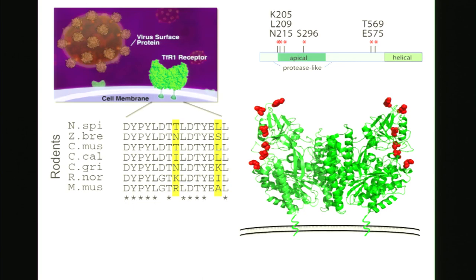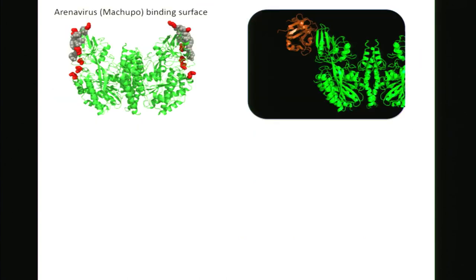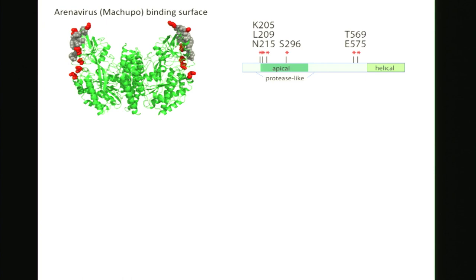When we analyzed transferrin receptor, we found six amino acid positions evolving like this. I was a little disappointed when I first saw these spread out along the linear structure — they didn't look like a binding surface. But one of my coolest days in science was when my postdoc mapped these sites onto the transferrin receptor 3D structure. Transferrin receptor is a dimer, and here's what these six positions look like in three dimensions — now it looks like a binding surface that viruses might contact.